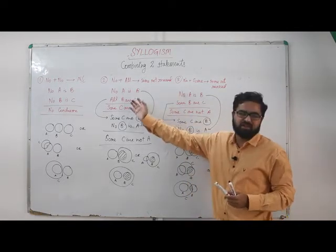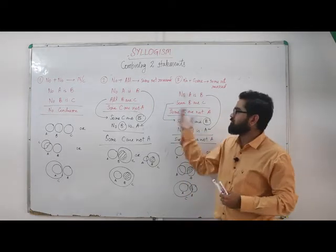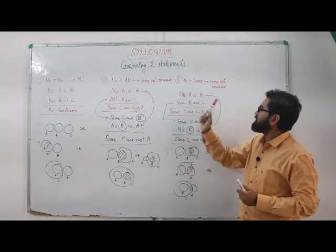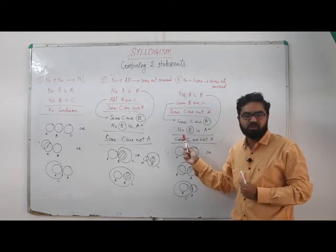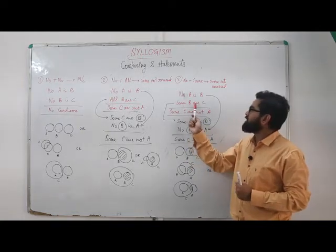Now let's look at the third one. This is quite similar to the second case, so this won't take much time. No plus some is again, if I reverse no A is B, I can write it as no B is A. Some B are C can be written as some C are B.